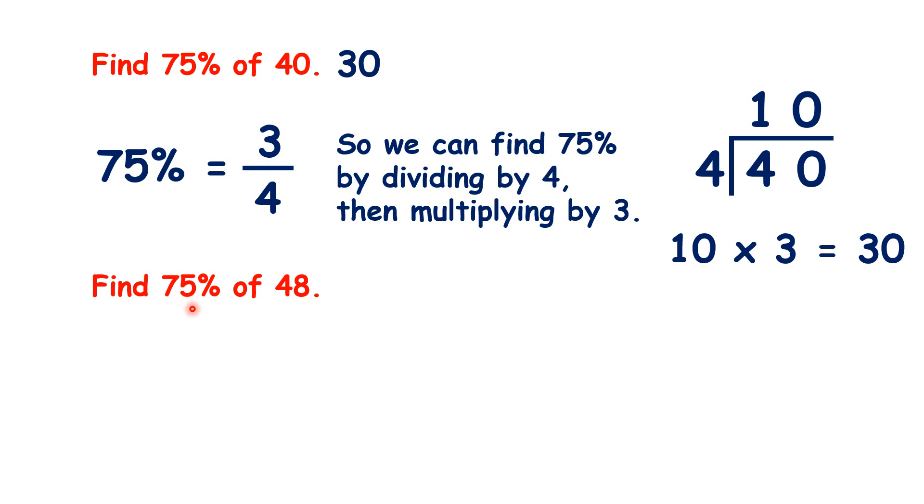So what is 75% of 48? Well again, we divide by 4, times by 3, so our answer is 36.